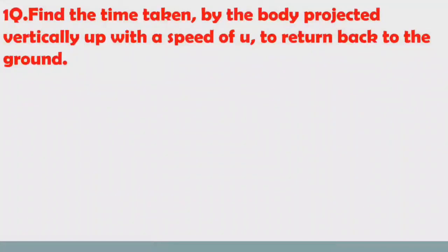Problem 1: Find the time taken by a body projected vertically up with speed u to return back to the ground. An object is projected vertically up with initial speed u. It travels to maximum height, its speed becomes zero, and it returns back. We have to find the time taken for the complete journey — that is nothing but time of flight.